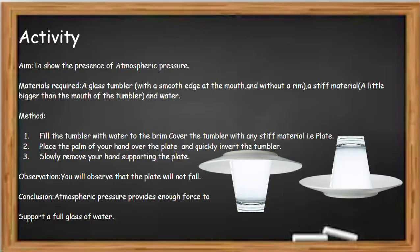Here is an activity to show the presence of atmospheric pressure. Materials required: a glass tumbler with a smooth edge at the mouth and without a rim, a stiff material slightly bigger than the mouth of the tumbler, and water. Method: fill the tumbler completely full — not a single millimeter of air should be left inside. Fill the tumbler with water to the brim, then cover it with any stiff material like a plate.